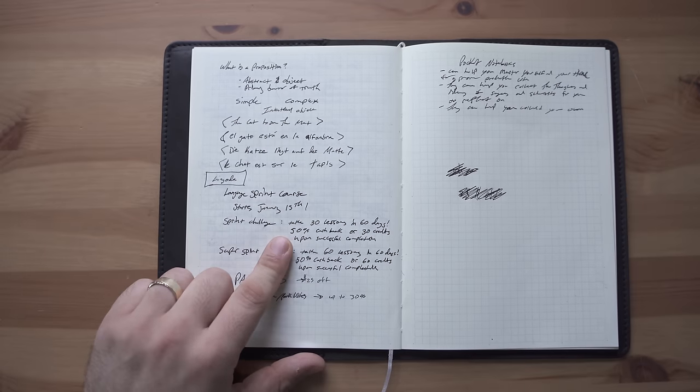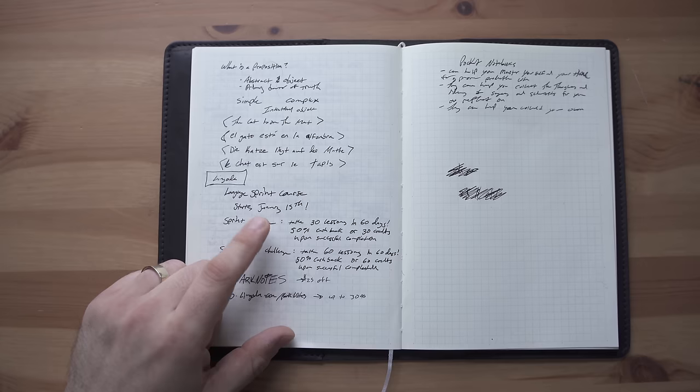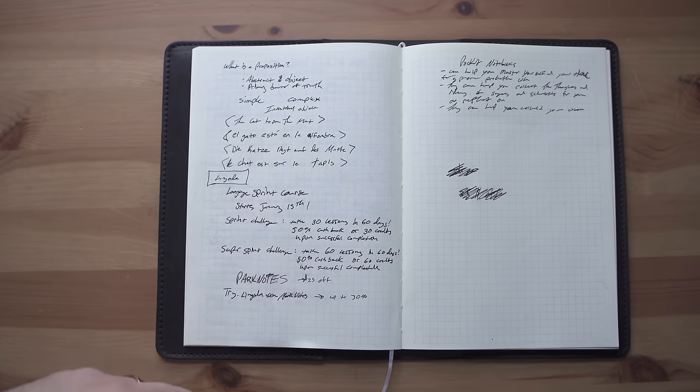In the sprint challenge, you take 30 lessons in 60 days. And upon successful completion, you get 50% cash back or 30 credits towards future classes.